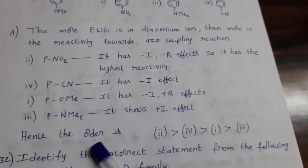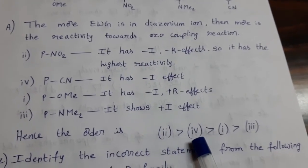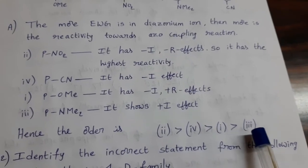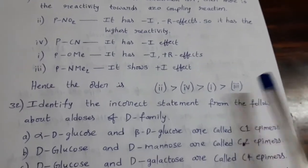What is the correct order towards azo coupling reaction? Second one greater than fourth one greater than first one greater than third one. So this is the answer.